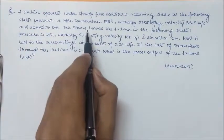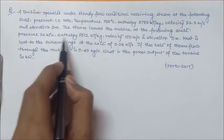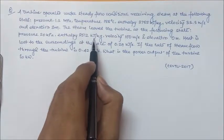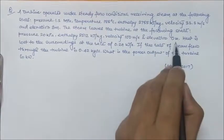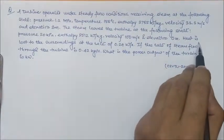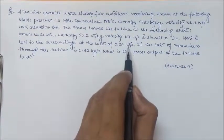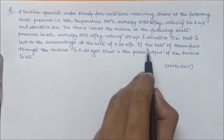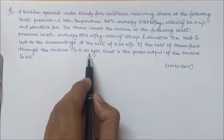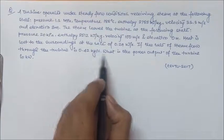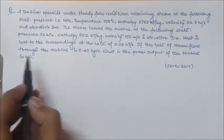The steam leaves the turbine at the following state: pressure 20 kilopascal, enthalpy 2512 kilojoule per kg, velocity 100 meter per second, and elevation 0 meter. Heat is lost to the surrounding at the rate of 0.29 kilojoule per second. If the rate of steam flow through the turbine is 0.42 kg per second, what is the power output of the turbine in kilowatt?